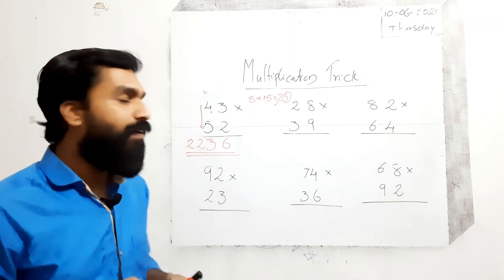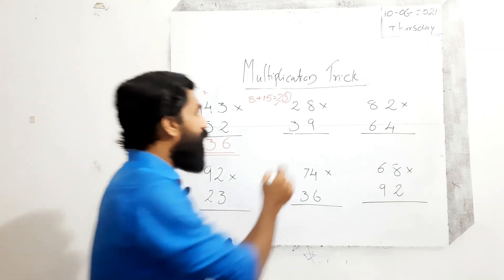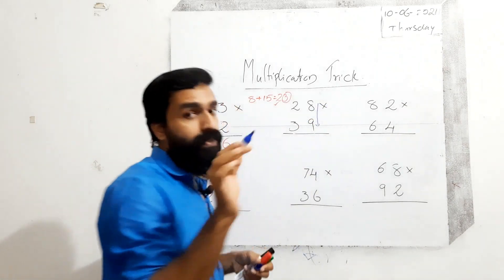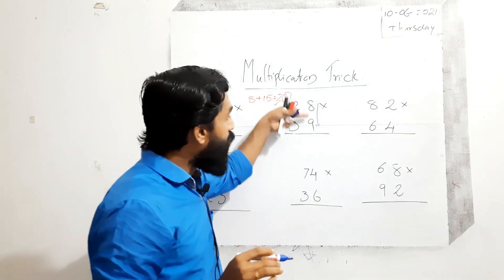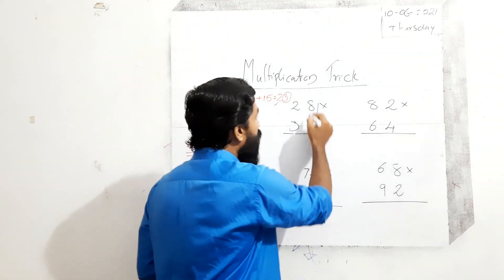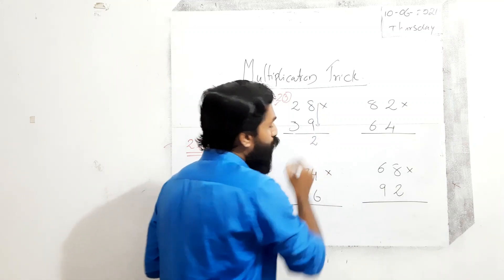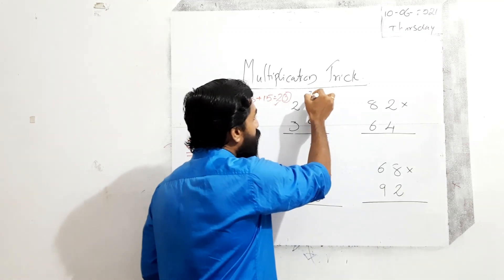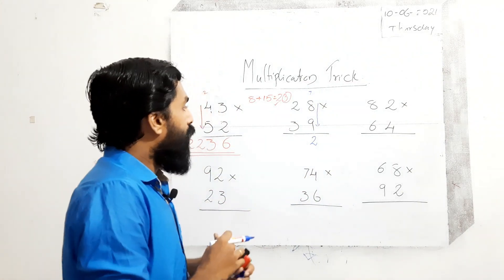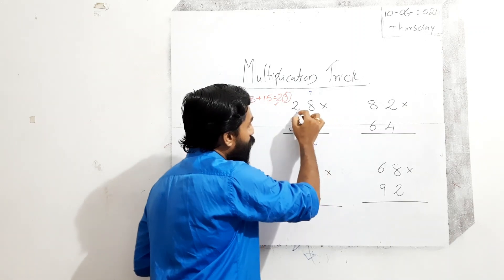Second example: listen carefully. Unit digit into unit digit — 8 into 9 is equal to 72. We write 2 here and 7 is the carry. Just keep that remaining 7 for the next step.